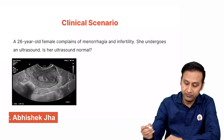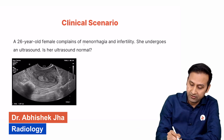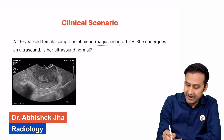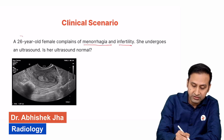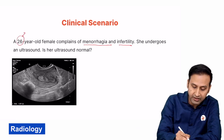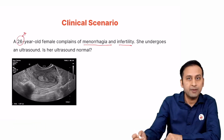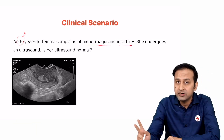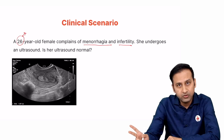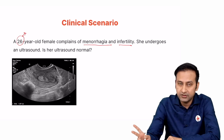There is a 26-year-old female who is complaining of menorrhagia and infertility. She is a young female coming up with two major symptoms: menorrhagia and infertility.